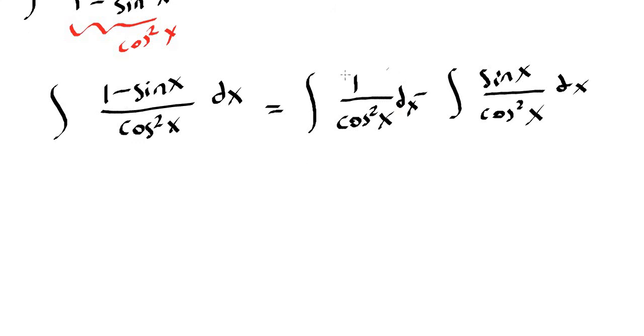Now we can use reciprocal trigonometric identities here. I have a detailed video about fundamental trigonometric identities that I am going to paste the link in the description. So 1 over cosine squared of x is equal to secant squared of x. And we can separate this integral again.